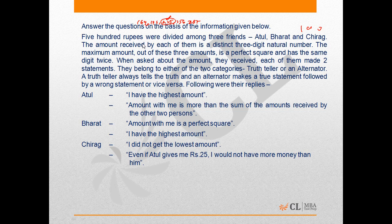When asked about the amount they received, each of them made two statements. They belong to either of two categories: truth-teller and alternator. A truth-teller always tells the truth, and an alternator makes a true statement followed by a false statement, or vice versa.